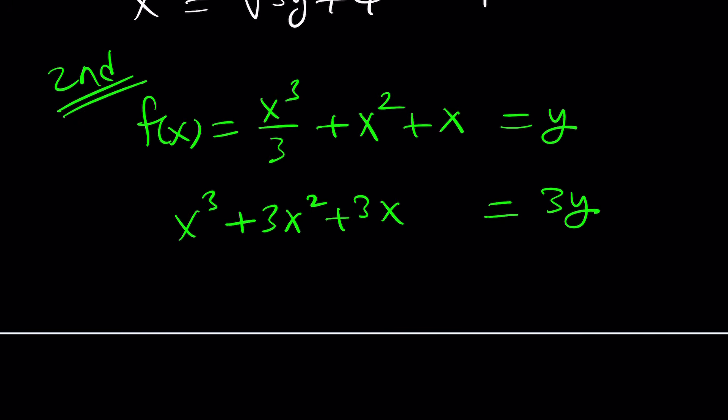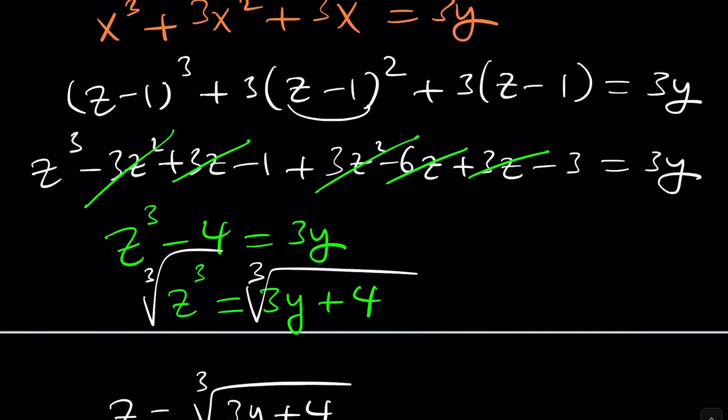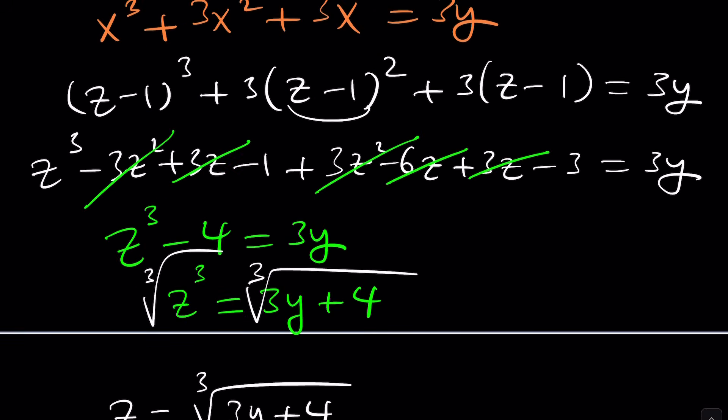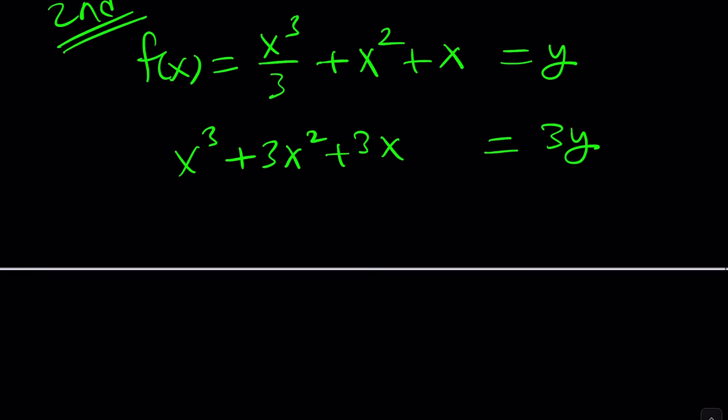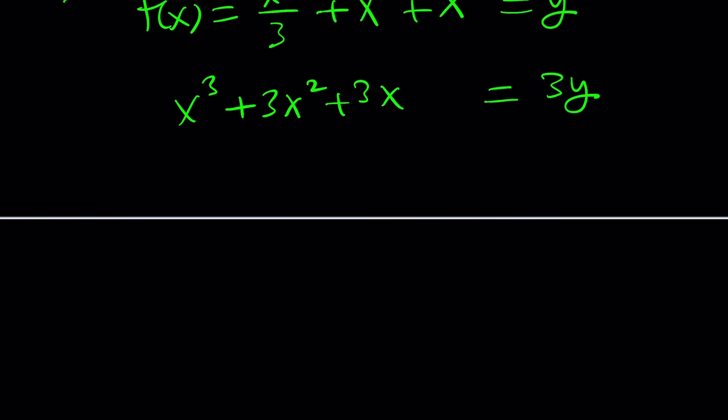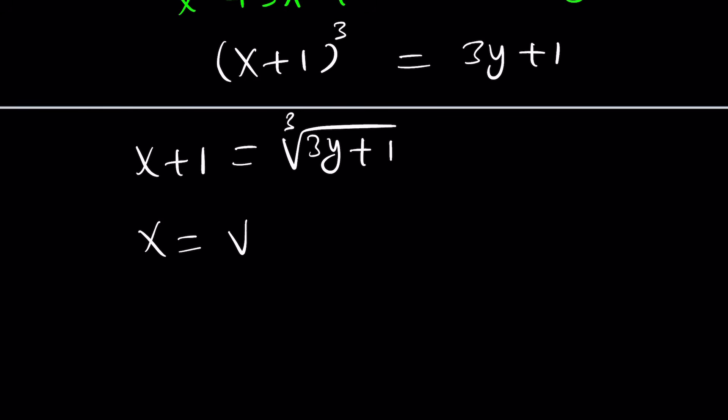So what you need—did I mess up anything? Let me check. x³ + 3x² + 3x. I was looking at my other solution and don't know where the 4 comes from, but we'll figure it out. If you add 1 to both sides, you get (x+1)³ = 3y + 1. From here it's very easy to solve for x, just like before. Cube root both sides, then subtract 1 from both sides.